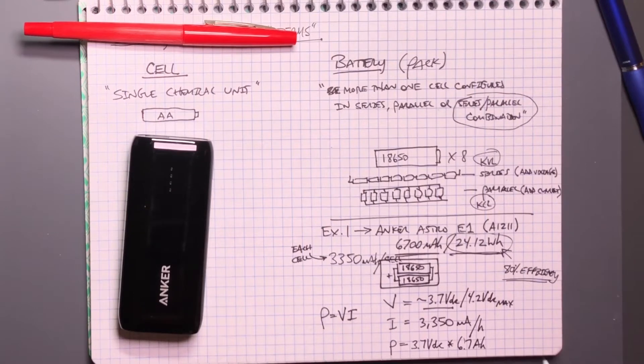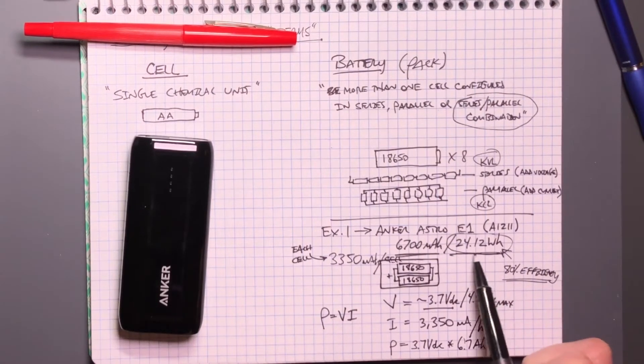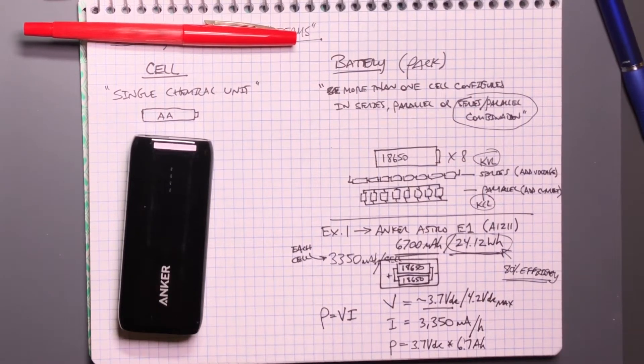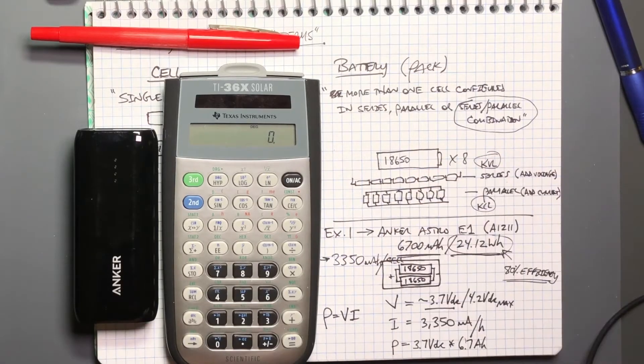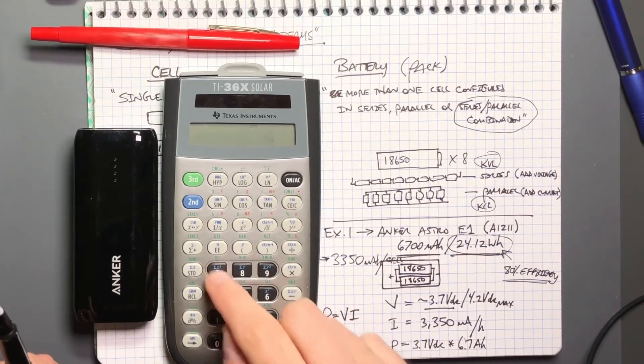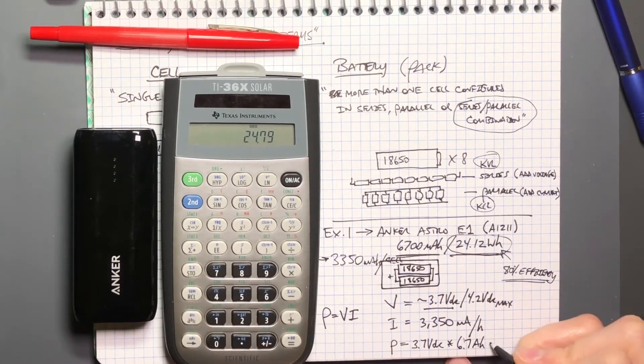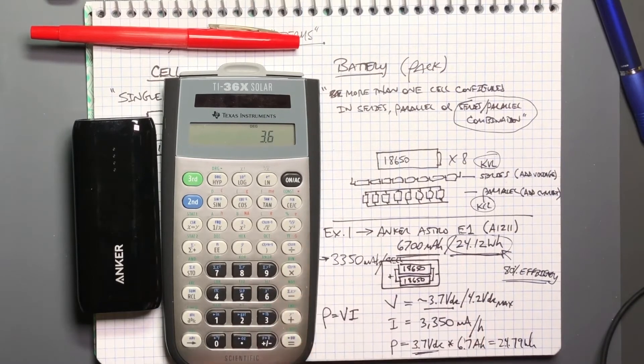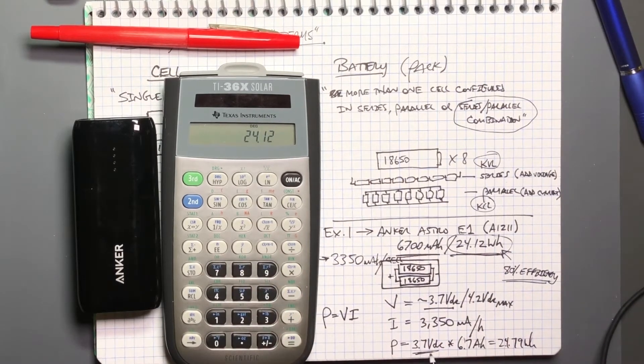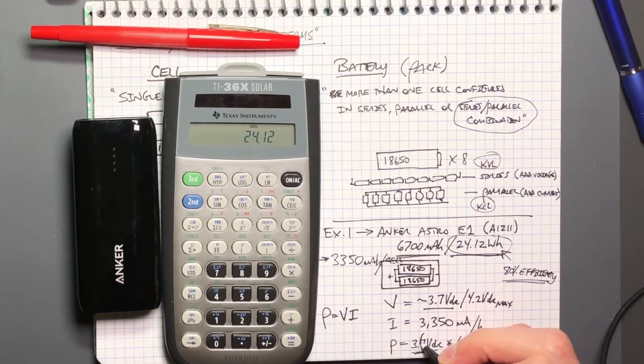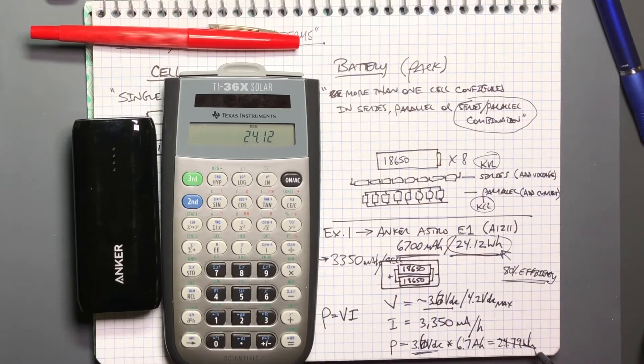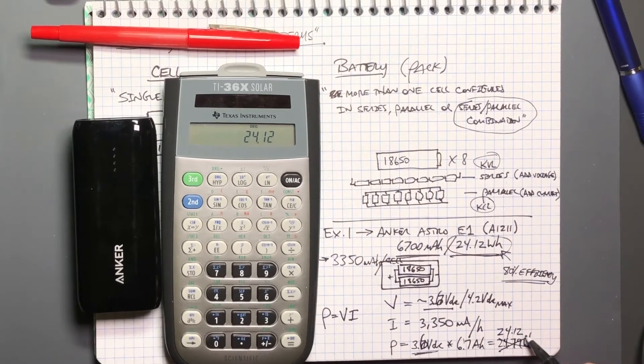So I would take 3.7 volts nominal times 6.7 amp hour. I am on the fly dividing this by 1,000 to get it into amp hour, not milliamp hour, because the total power rating is in watt hour, not milliwatt hour. If you wanted it in milliwatt hour, you would just not do the division by 1,000. And so if I were to do that calculation with my calculator, so if I were to multiply 3.7 times 6.7, then I would get 24.79. Now, where they get 24.12, I'm not sure. Maybe it's the nominal voltage. It might be the nominal voltage. They might consider 3.6 volts, 6.7. That's it. So they consider the nominal voltage to be actually 3.6 volts and not 3.7. So I stand corrected. This is actually 3.6. And then that times 6.7 amp hour gives you 24.12, exactly what is marked on the battery pack.